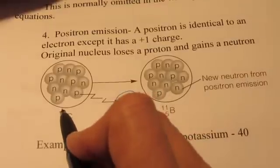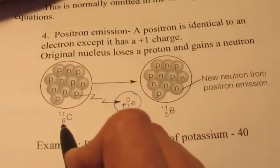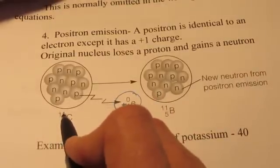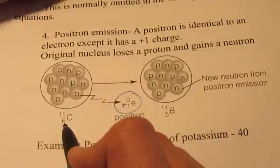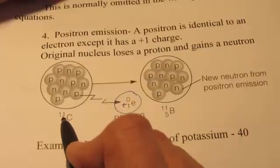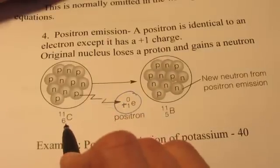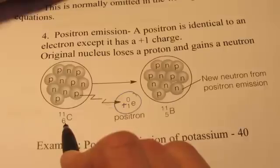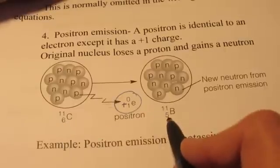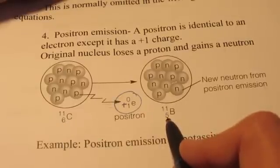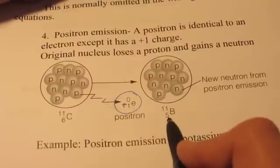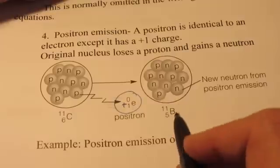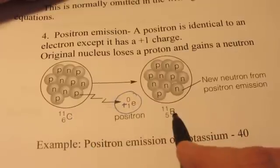So if we have carbon-11, it has 6 protons and 5 neutrons. Now that's where the 11 comes from. Remember, the mass number is protons plus neutrons. If 6 of them are protons, the other 5 must be neutrons. And a proton turns into a neutron. So the atomic number is going to go down by 1 because it's turned into a neutron. The mass number stays the same. The atomic number goes down by 1. So we transmutate carbon-11 into boron-11.